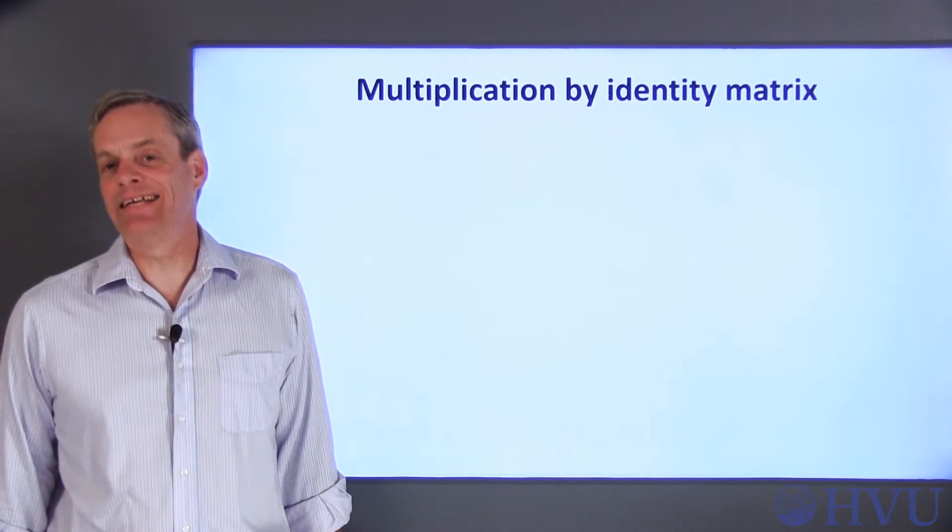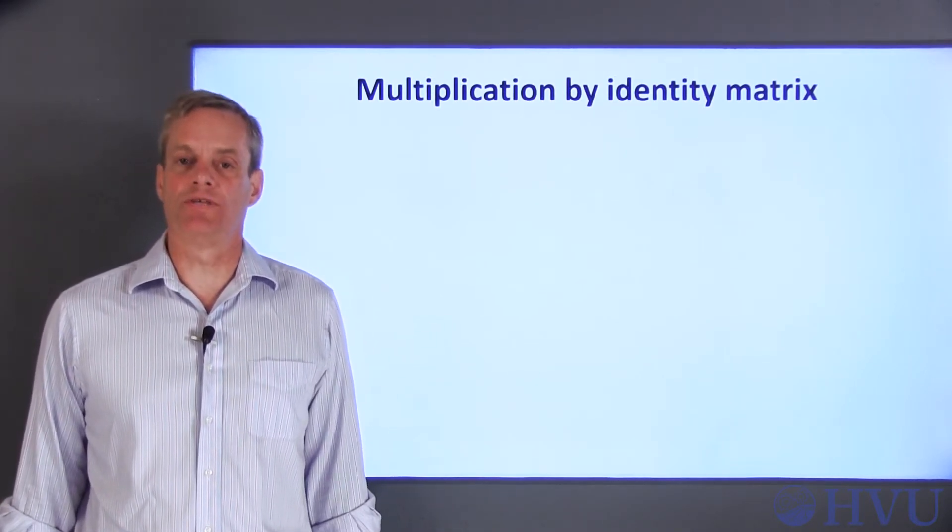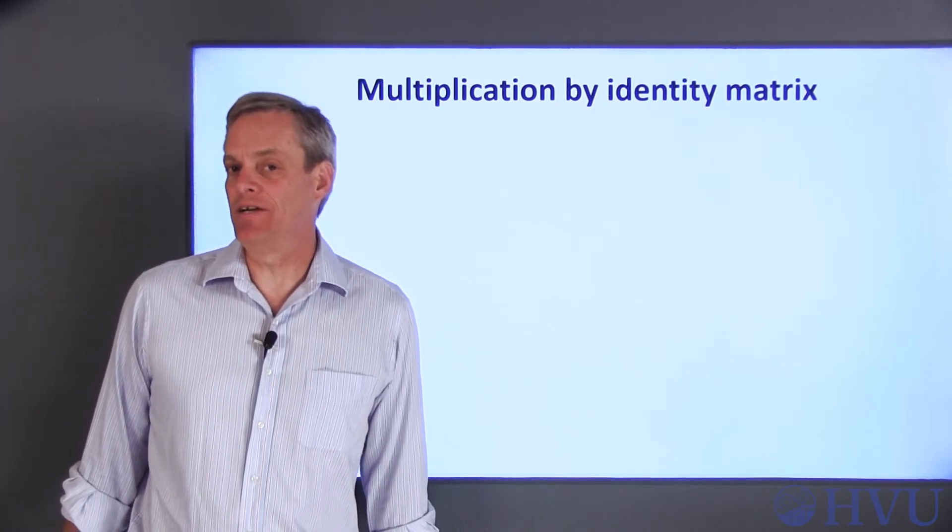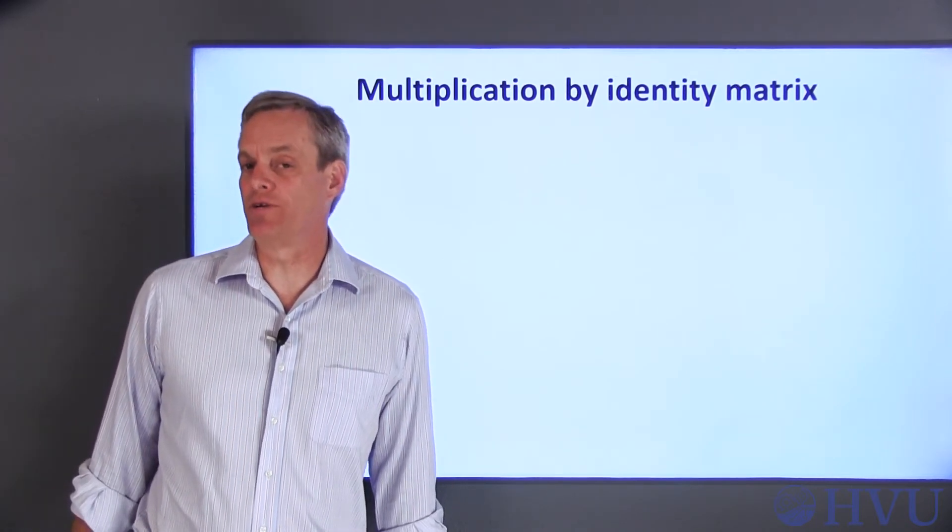In linear algebra, an identity matrix can play the same role as the number 1, since when you multiply a matrix by the identity matrix, you get the original matrix back.